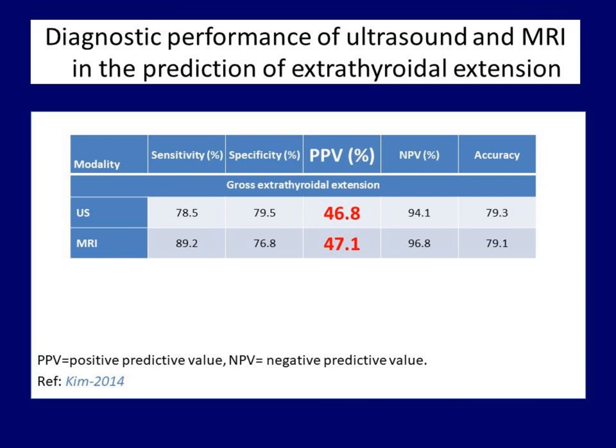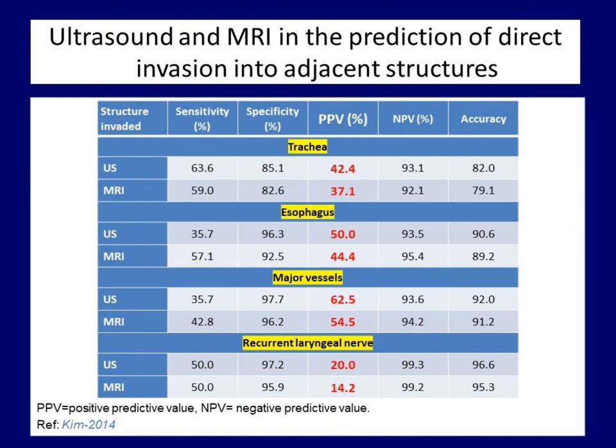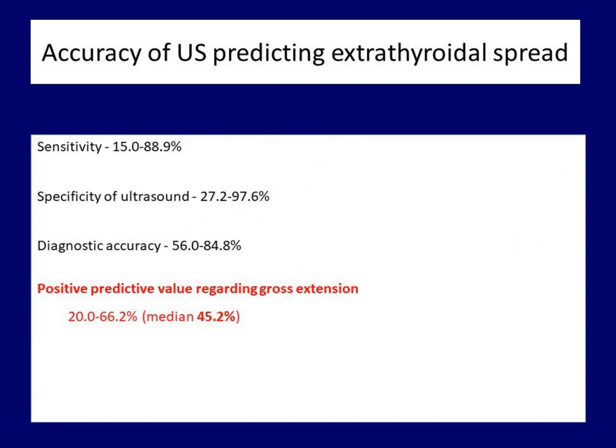If we relied on these radiological findings, more than half of the patients would be upgraded regarding the clinical or pathological status. A further table shows the performance of the two methods in judging the infiltration of major anatomical structures. The positive predictive values range from 14 to 62%, meaning that neither ultrasound nor MRI is able to judge the degree of gross extension. As the data prove, the role of radiology is the exclusion of extrathyroidal spread — in this area the results are excellent. The ultrasound assessment shows a wide range of diagnostic sensitivities, specificities, and accuracy values.